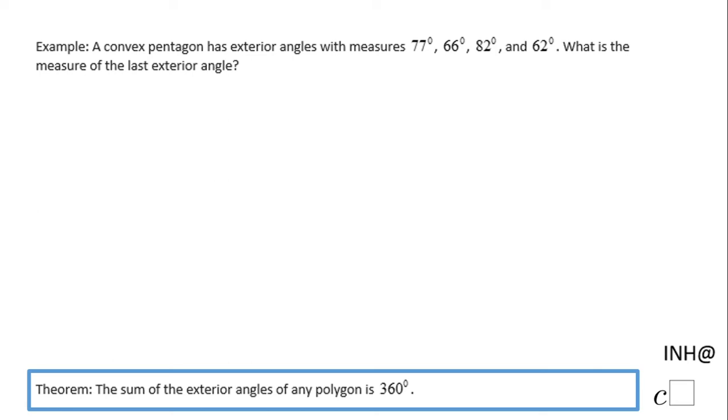Welcome or welcome back at I Need Help at C Squared. In this example we have a convex pentagon, a five-sided polygon, and the exterior angles measure 77°, 66°, 82°, and 62°. We are given four of them and we need to find the last one, the fifth one.